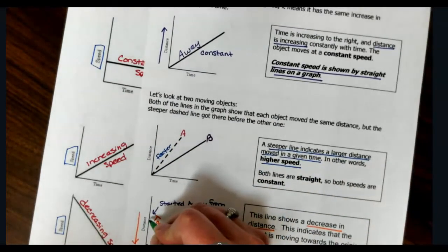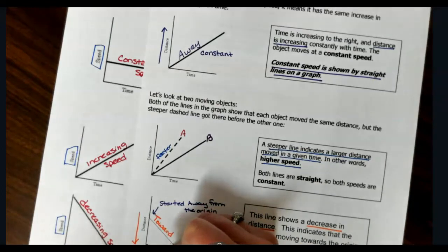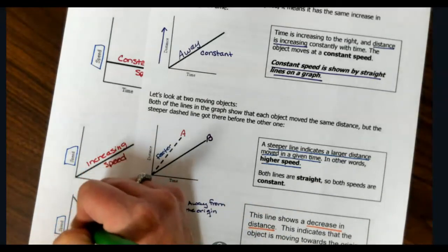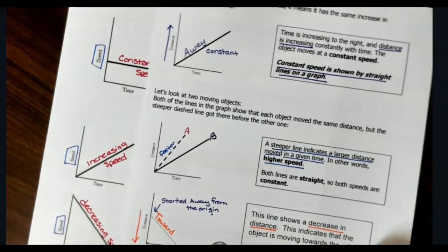Distance time graph, where we have a negative slope, that means the object is moving back towards the origin. Negative slope on a speed graph indicates decreasing speed.